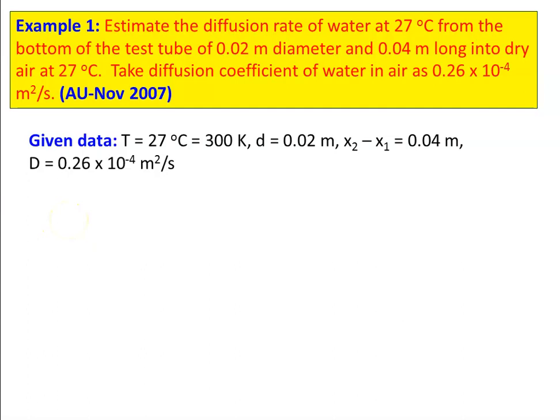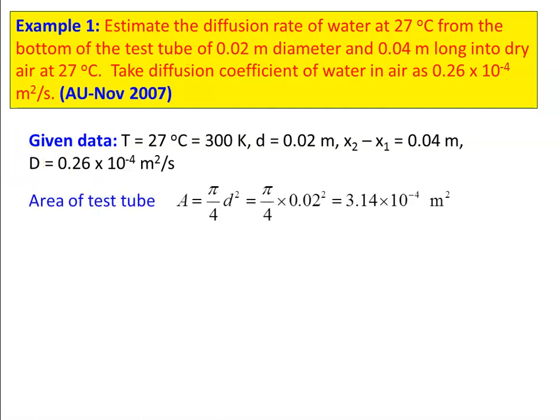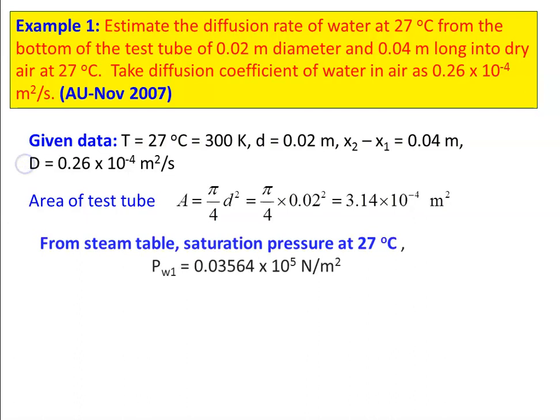Write down the given data. Temperature T equal to 27 degrees Celsius, which is 300 Kelvin. Diameter equal to 0.02 meter and x2 minus x1, the length of the air column, is 0.04 meter. Diffusion coefficient is 0.26 into 10 power minus 4 meter square per second. The area of the test tube is pi by 4 d square, which is 3.14 into 10 power minus 4 meter square.